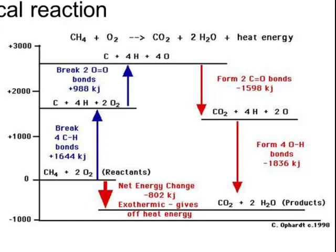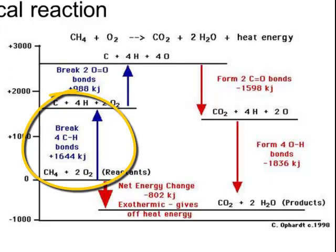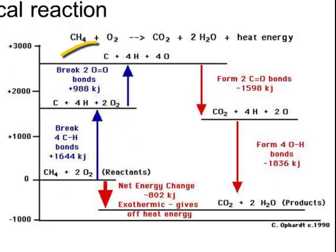So if forming bonds releases energy, breaking bonds will require energy. Elements are more stable when they're in compounds, and so if I'm going to break those elements apart to form individual atoms, I'm making them more unstable. Because I have to force them to become more unstable, I have to add energy. That input of energy is represented by the blue lines on the left-hand side, where I increase my potential energy when I break the four carbon-hydrogen bonds in the methane and the two oxygen bonds in the oxygen molecule.